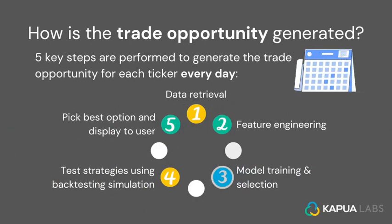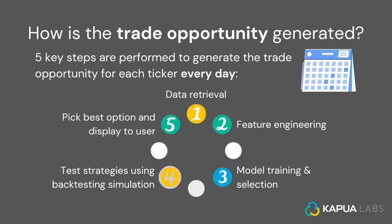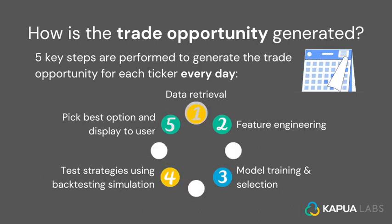How is a trade opportunity generated? There are five key steps that are performed to generate the trade opportunity for each ticker every day. Those steps are: number one, data retrieval; number two, feature engineering; number three, model training and selection; number four, test strategies using backtesting simulation; and number five, picking the best strategy and displaying it to the user.